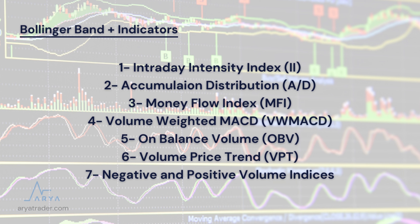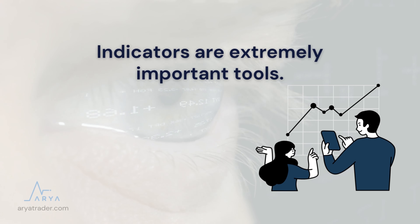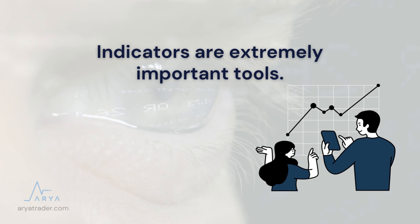In addition, Mr. Bollinger has listed the auxiliary indicators that can be used, in his book where he explains the bands, as follows: 1. Intraday Intensity Index. 2. Accumulation Distribution. 3. Money Flow Index. 4. Volume Weighted MACD. 5. On Balance Volume. 6. Volume Price Trends. 7. Negative and Positive Volume Indices.